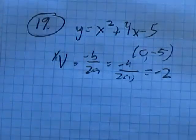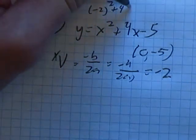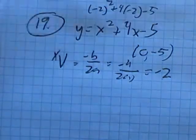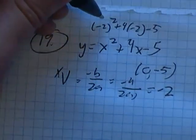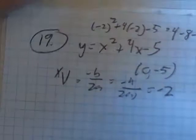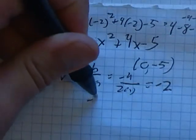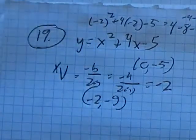Let me plug that back in to get my y part. Negative 2 squared plus 4 times negative 2 minus 5. Negative 2 squared is 4 minus 8 minus 5. 4 minus 8 is negative 4. It looks like negative 9. So my vertex is at negative 2, negative 9.